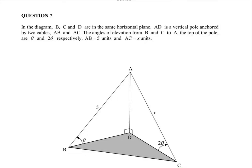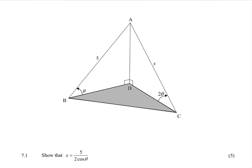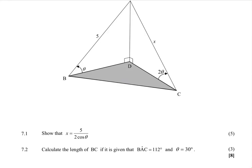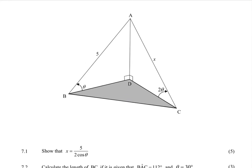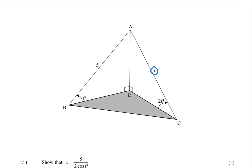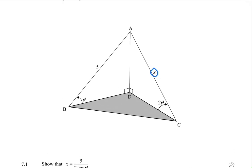We have a 3D diagram here and the first question, 7.1, is saying: show that X is equals to 5 divided by 2 cos theta. Let's look at triangle ADC, where X lies. The only thing we know is that this angle here is 90 degrees and then this angle is 2 theta, and then we have X there.